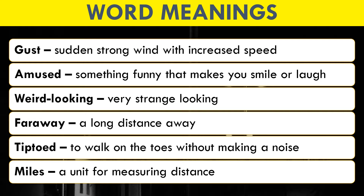Before studying the chapter we should know the meanings of some difficult words. First is 'gust' — sudden strong wind with increased speed, means aandhi. 'Amused' — something funny that makes you smile or laugh. 'Weird looking' — very strange looking, ajeeb sa dikhne wala. 'Far away' — a long distance away, kaafi dure. 'Tiptoed' — to walk on the toes without making a noise, bina awaz ke chalna.